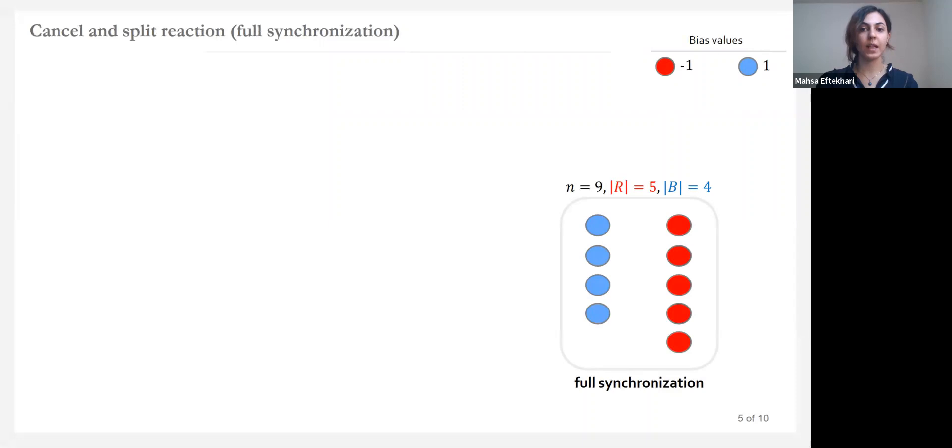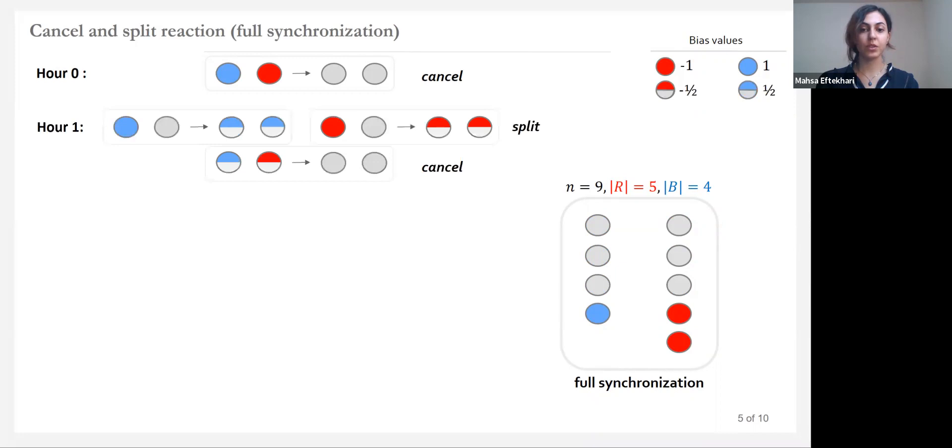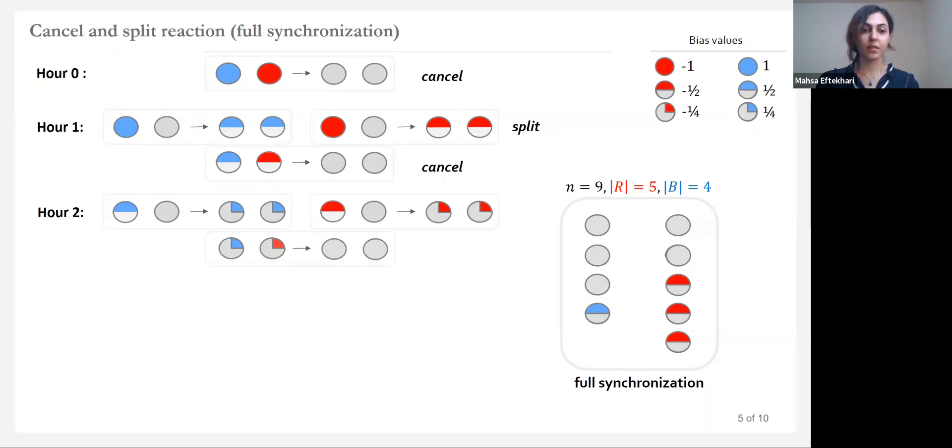Here we show an example of how a population of size nine with this initial configuration computes the majority in polylogarithmic time. Most of the majority protocols in the previous chart work in synchronized hours of cancel and split reaction. By cancel, we mean when two agents with the opposite opinion interact, they can both safely switch to neutral, which is shown in gray. And by split, we mean recruiting the neutral agents to carry an opinion while preserving the invariant of the total supporters. We achieve this by introducing a bias value that gets divided by two if a biased agent recruits a neutral agent. Now in every interaction, we preserve the difference between sum of the biases across the population. With this protocol, we limit the agents to split only once during each hour.